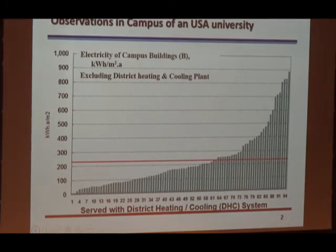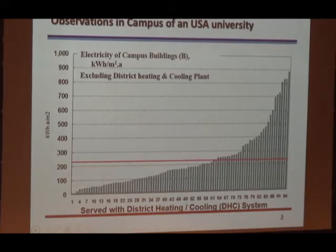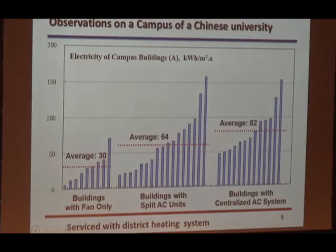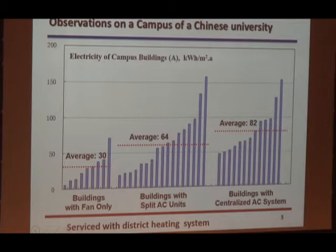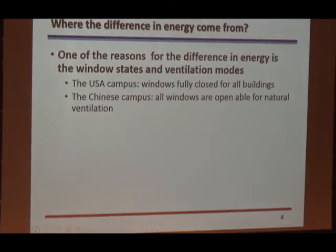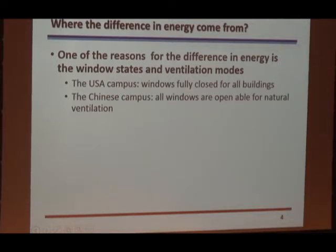Here is the electricity used in a university campus in the United States. You can see the electricity used in terms of per square meters, annual kilowatt hour — it's around 200, or some even more. And here is, with the same climate, Chinese campus buildings in a Chinese university. You can see quite a difference, something like three to five times. Where does the difference come from? One of the reasons is the window state and the ventilation model.